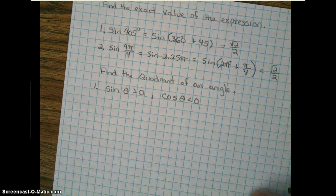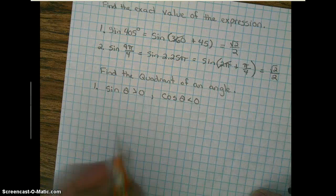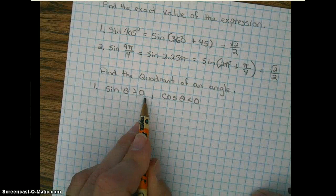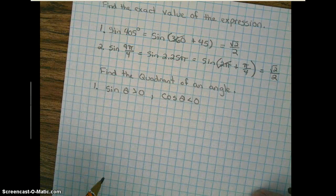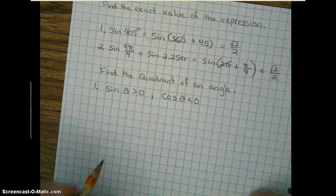All right, the next topic: find the quadrant of an angle. So they tell us that the sine of the angle is greater than 0, and the cosine of theta is less than 0. So what quadrant is this angle located in?